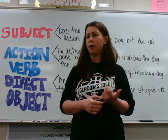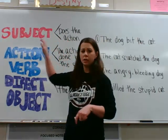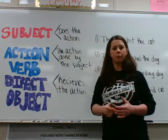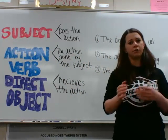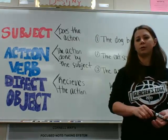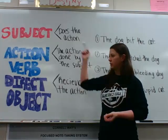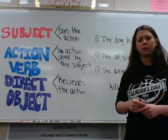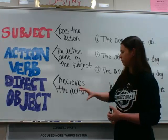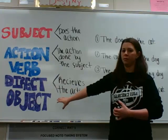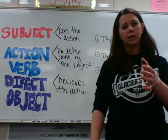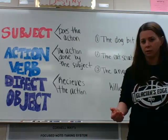The first building block is the subject. The subject does the action of the sentence. The action verb is the action of the sentence, which is done by the subject. And the third component is the direct object — the direct object receives the action of the verb.